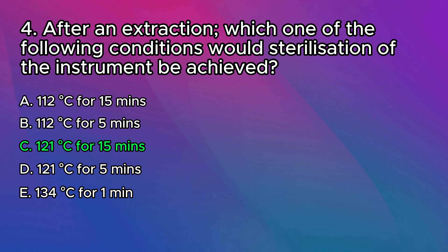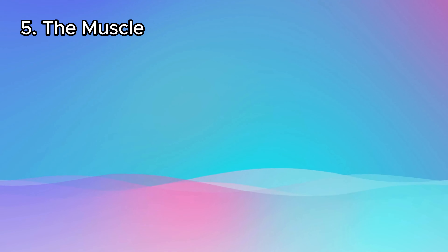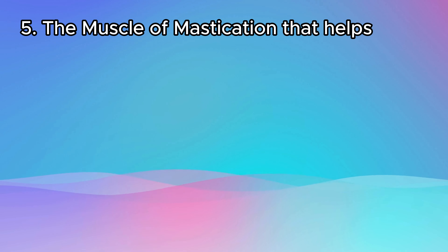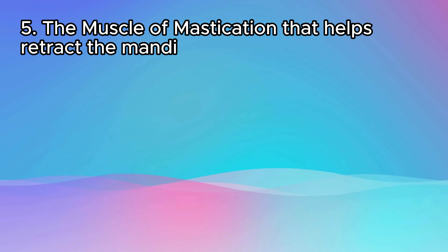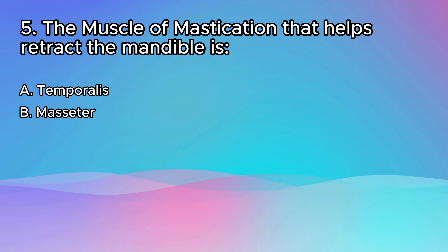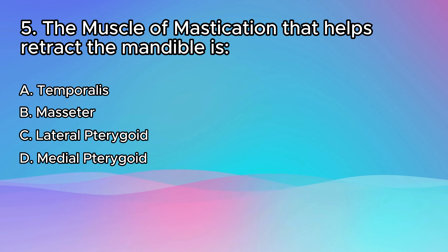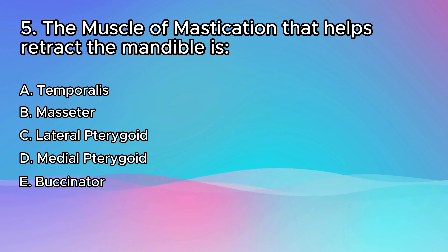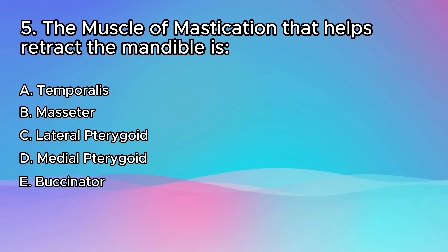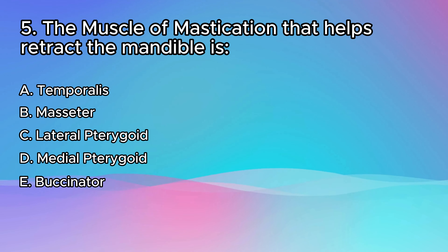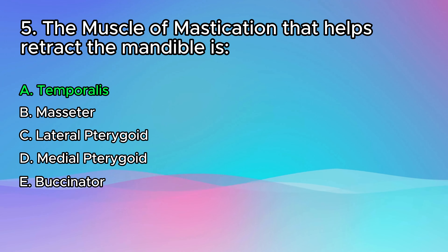Question five: the muscle of mastication that helps retract the mandible is — a) the temporalis, b) the masseter, c) the lateral pterygoid, d) the medial pterygoid, or e) the buccinator muscle. This is a straightforward knowledge question. The correct answer is the temporalis — it's those inferior fibers that are able to pull the mandible back.